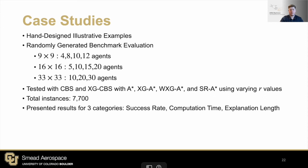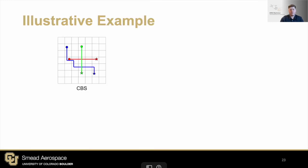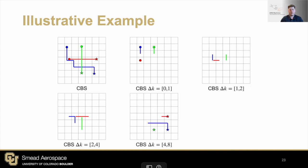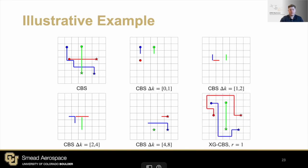So now I'd like to talk about the performance of these algorithms. We present an extensive experimental section consisting of illustrative examples and benchmark evaluations. Overall, over 7,000 MAPF instances were tested using XGCBS with different low-level search techniques. The performance of these algorithms were compared in terms of success rate, computation time, and explanation length. The plan outputted by CBS may be trusted by experts due to their knowledge of CBS and expertise in MAPF. However, a human non-expert may get concerned with seeing so many intersections of paths. XGCBS offers human users the ability to calculate a different plan that can be explained much more easily.